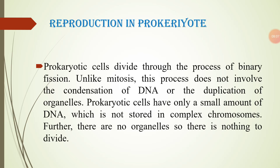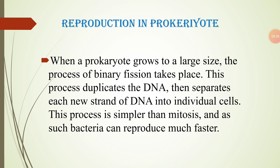Prokaryotic cells divide through the process of binary fission, unlike mitosis. This process does not involve the condensation of DNA or the duplication of organelles. Prokaryotic cells have only a small amount of DNA, which is not stored in complex chromosomes, and there are no organelles to divide. When a prokaryote grows to a sufficient size, binary fission takes place — the DNA is duplicated, then each new strand of DNA is separated into individual cells. This process is simpler than mitosis, and as such bacteria can reproduce much faster.